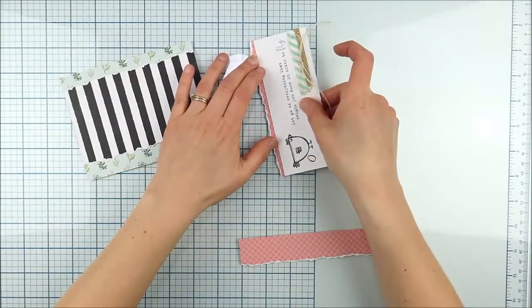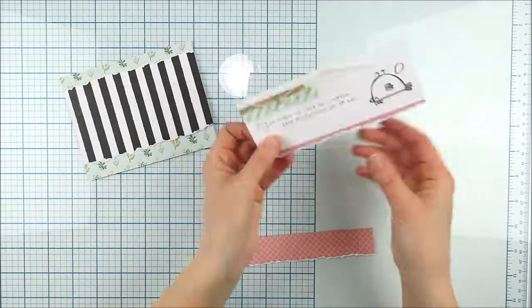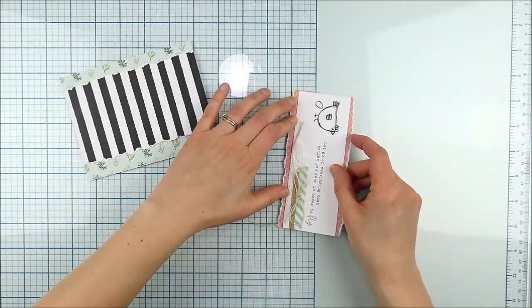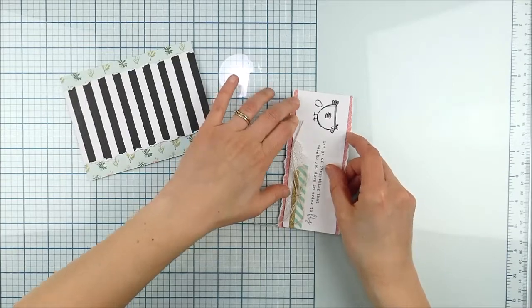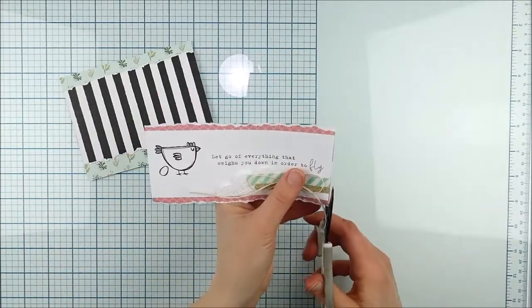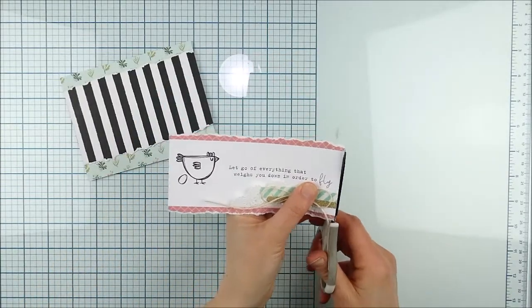All right, so I added some just tape runner to the back of that white panel, and then I'm going to go ahead and just adhere down that pattern paper, the pink on each side.